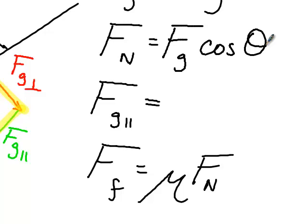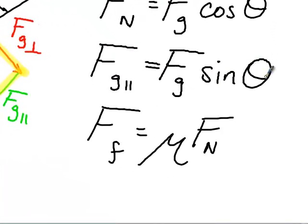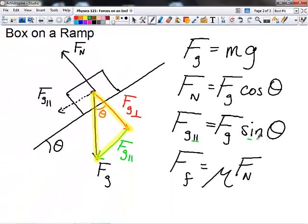Remember, we said before there was no specific equation for normal force, but in this case there is — just don't use it in every situation. FG parallel is the opposite side from theta, and the trig function relating to the opposite side is sine. So FG parallel equals FG times the sine of theta. A way to remember this: everyone knows the Ozzy Osbourne song Crazy Train, which starts with 'I, I, I' — that's how you remember FG parallel uses FG sine theta.